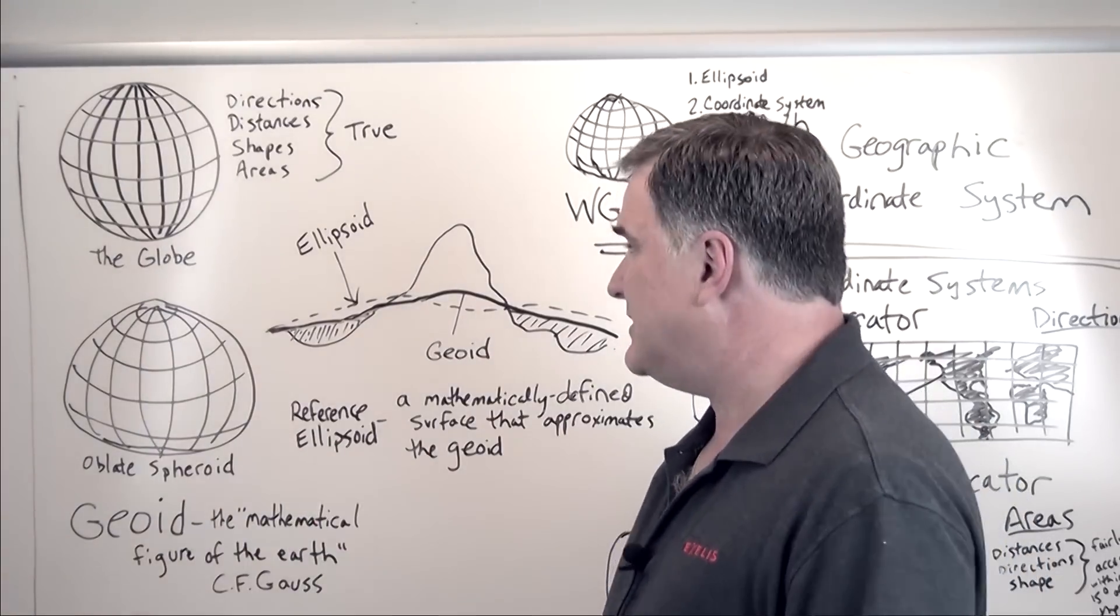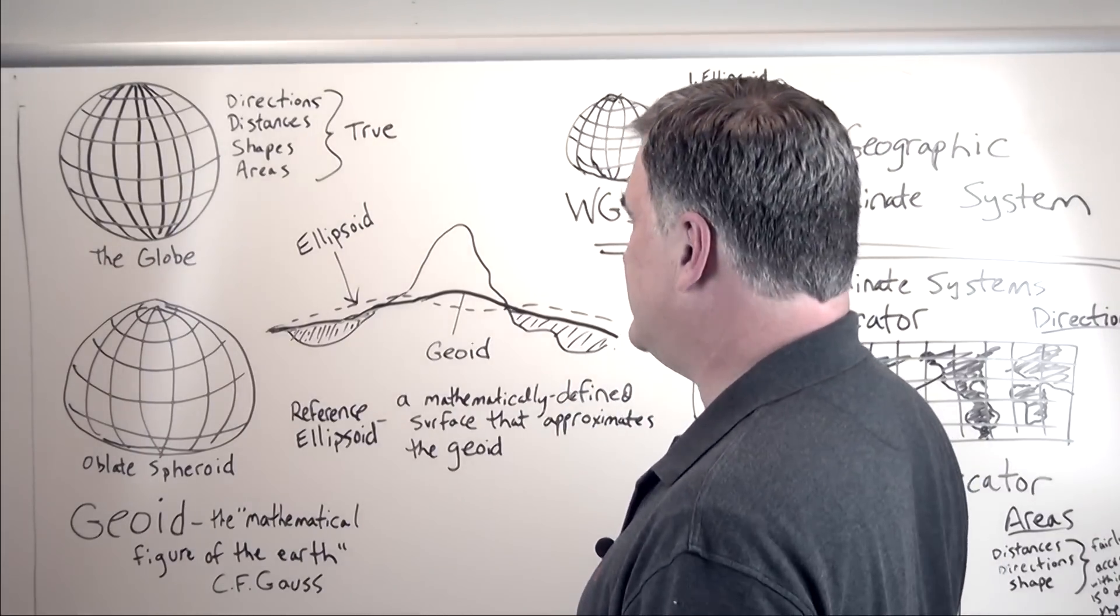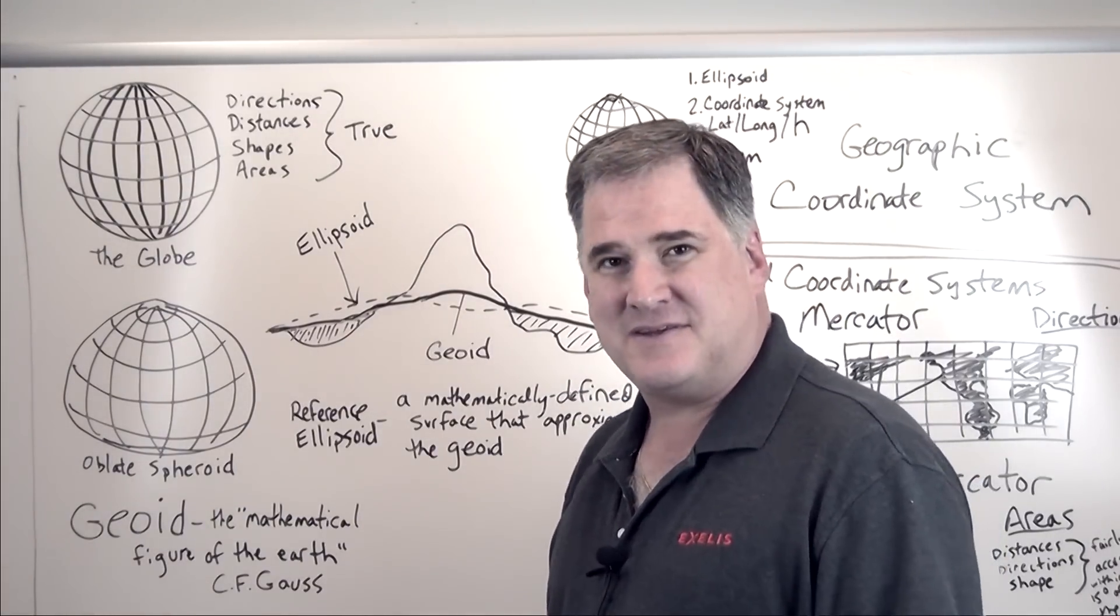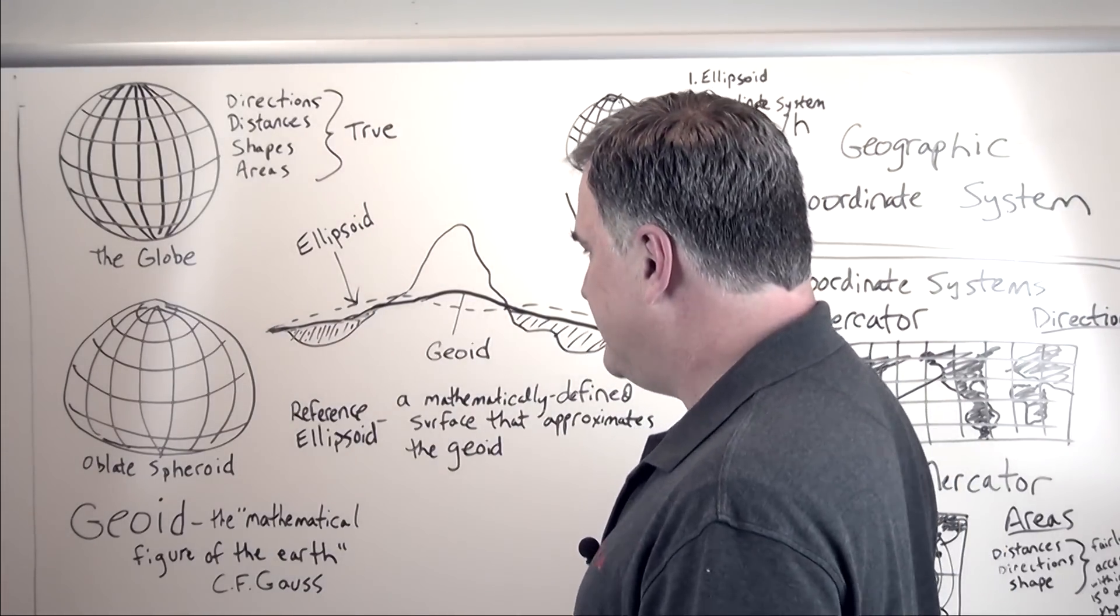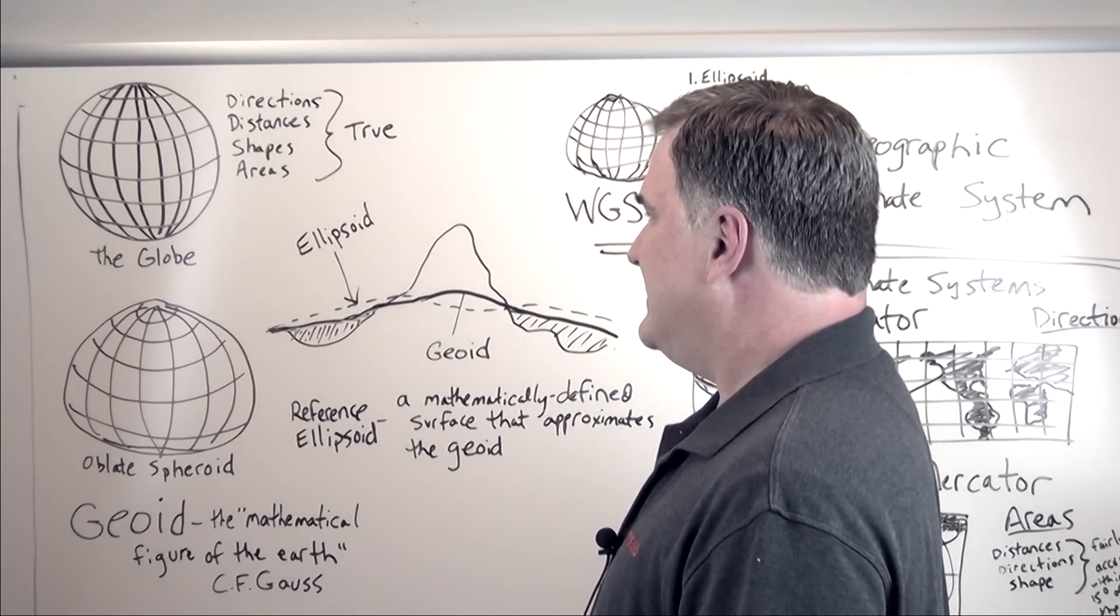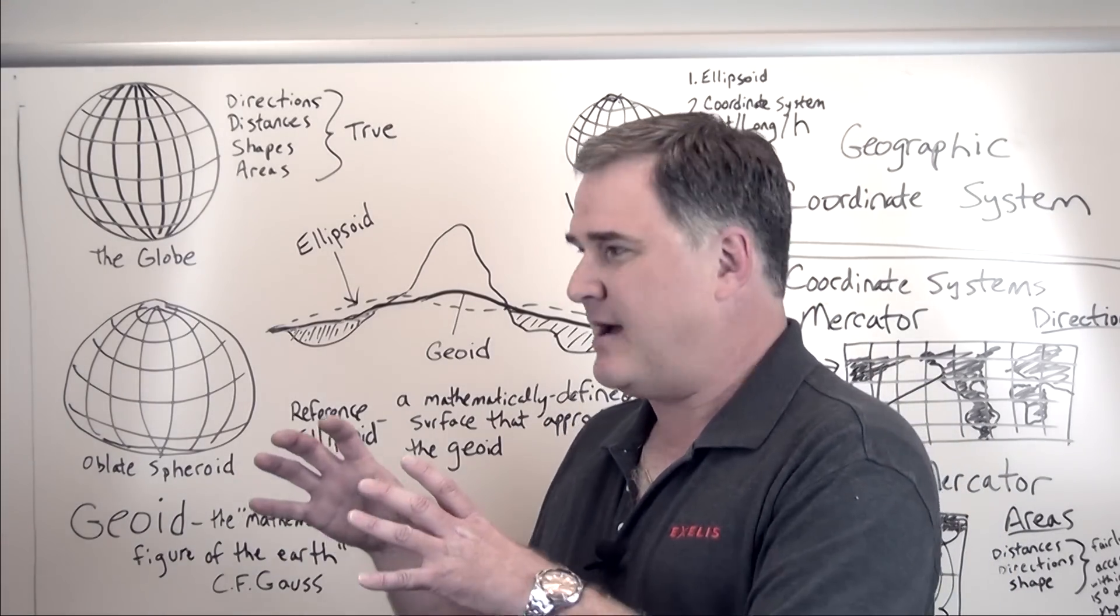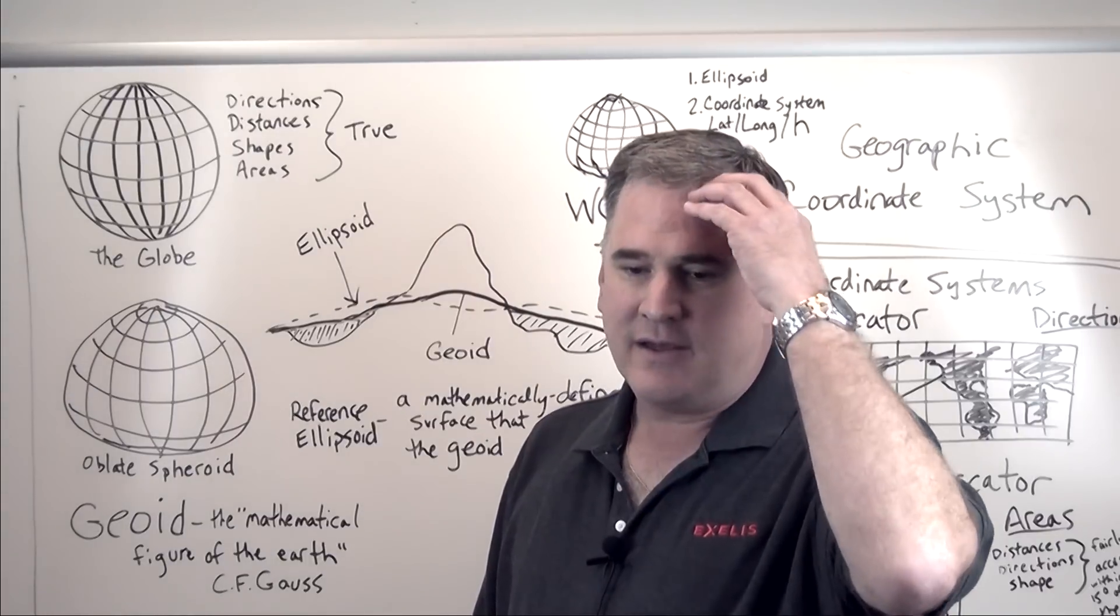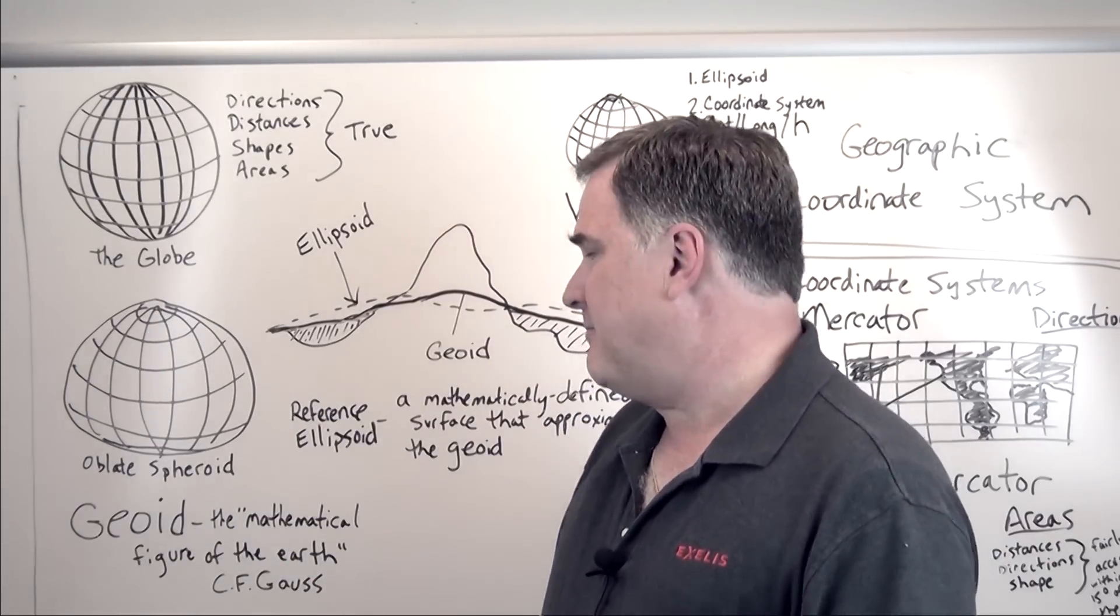However, the globe is very small scale, so only very large scale features are really appropriate to view on it. It's not very convenient to put in your pocket and walk around with it. So we like to have maps. How do we actually take a three-dimensional object like the earth and display it correctly with a minimum of distortion or error on something like a map?